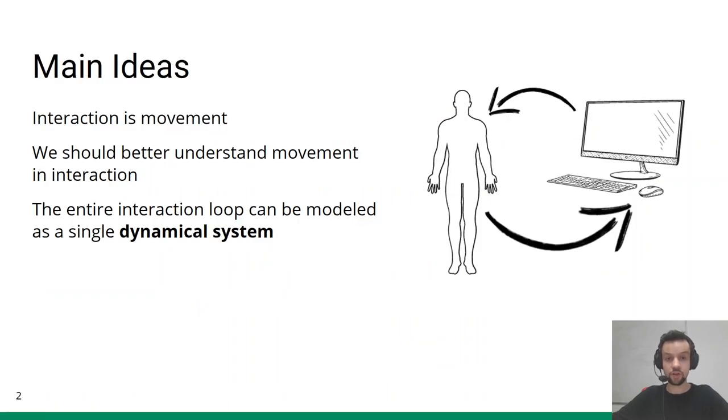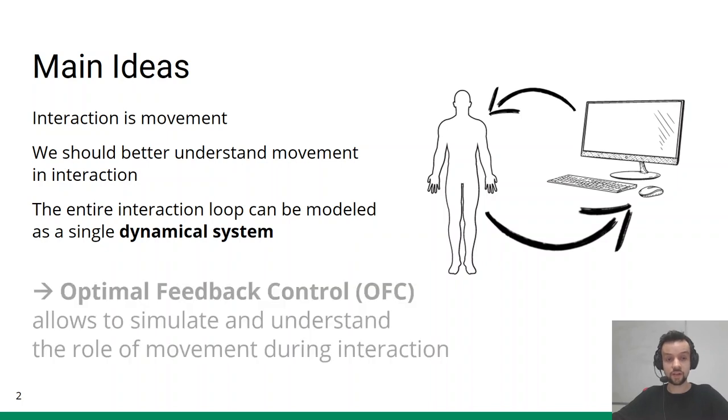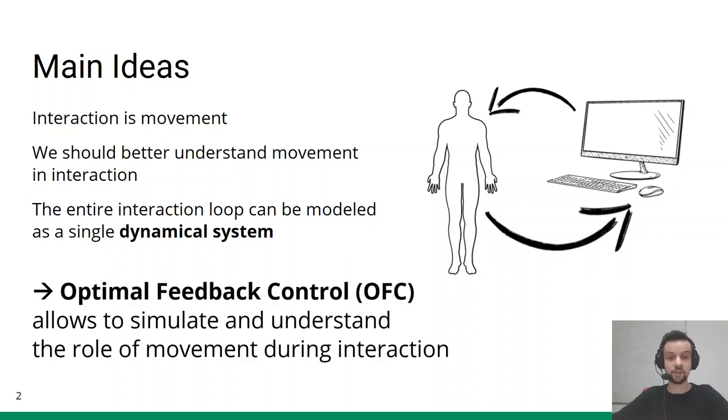Whether we point with a mouse, scroll through an article, or play a VR game, almost every interaction technique is based on human body movement. Given this substantial role, we should aim for a better understanding of how movement in interaction is generated. To this end, we propose to view the user and the computer as a single dynamical system. We further assume that the user aims to control this joint human-computer system optimally. Under these assumptions, we propose that we can understand interaction from an optimal feedback control perspective.